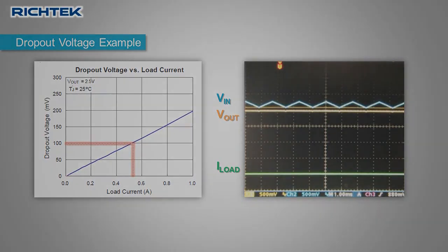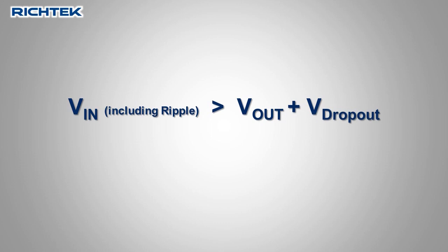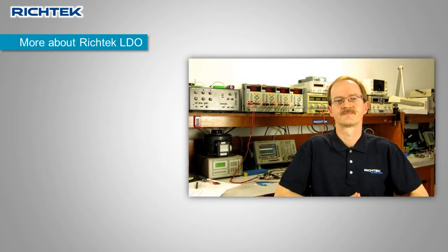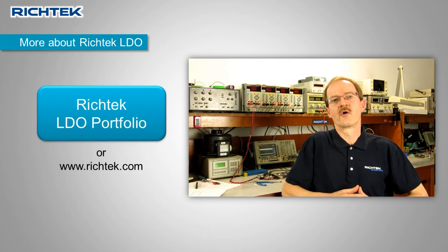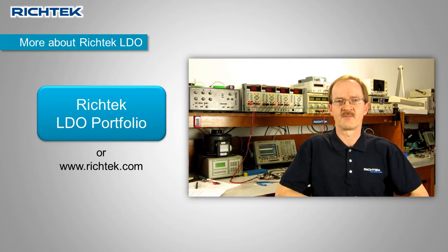To maintain well-regulated LDO output voltage, you should make sure that the input voltage including ripple is always higher than the output voltage plus the LDO dropout voltage. I hope this video has given you a better understanding about LDO dropout voltage. If you would like to know more about Richtek LDOs, please click the link at the left side or visit the Richtek website at www.richtek.com.